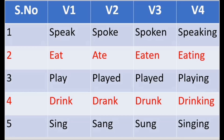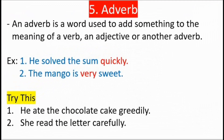Fifth part of speech — adverb. An adverb is a word used to add something to the meaning of a verb, an adjective, or another adverb. Through an example: 'He solved the sum quickly.' Solved is a verb — how did he solve it? Quickly. So 'quickly' is the adverb. Second: 'The mango is very sweet.' Sweet is the adjective, but 'very' — very sweet — that 'very' is the adverb. Try these two sentences and identify the adverb.